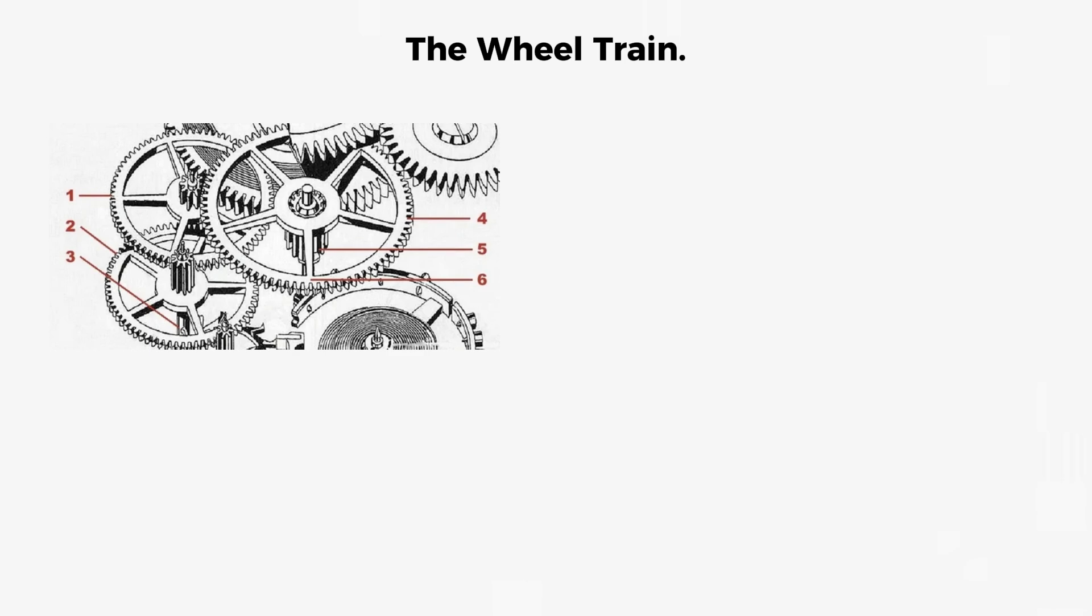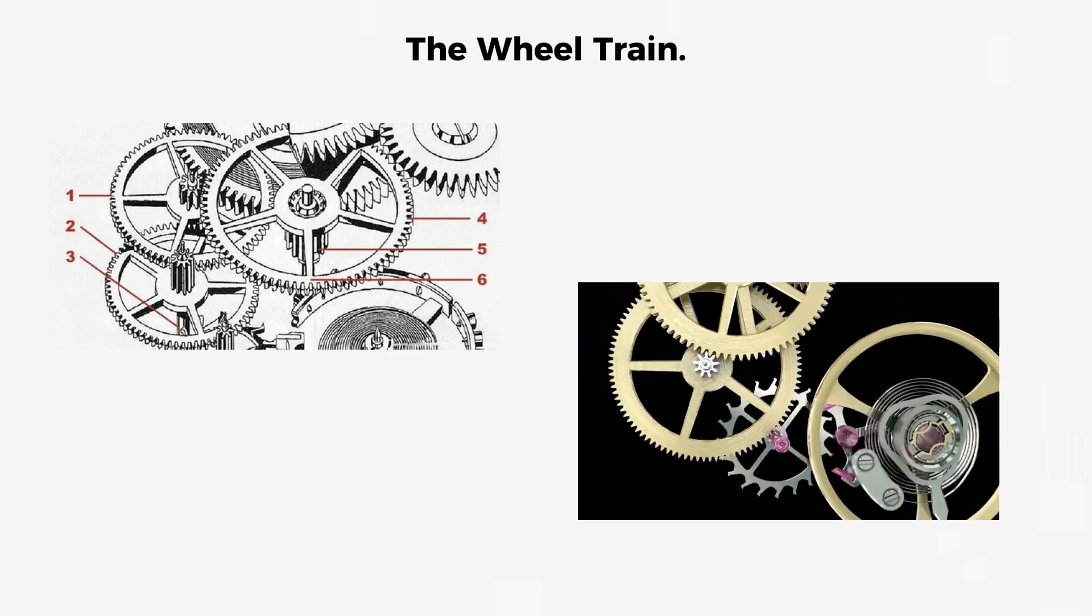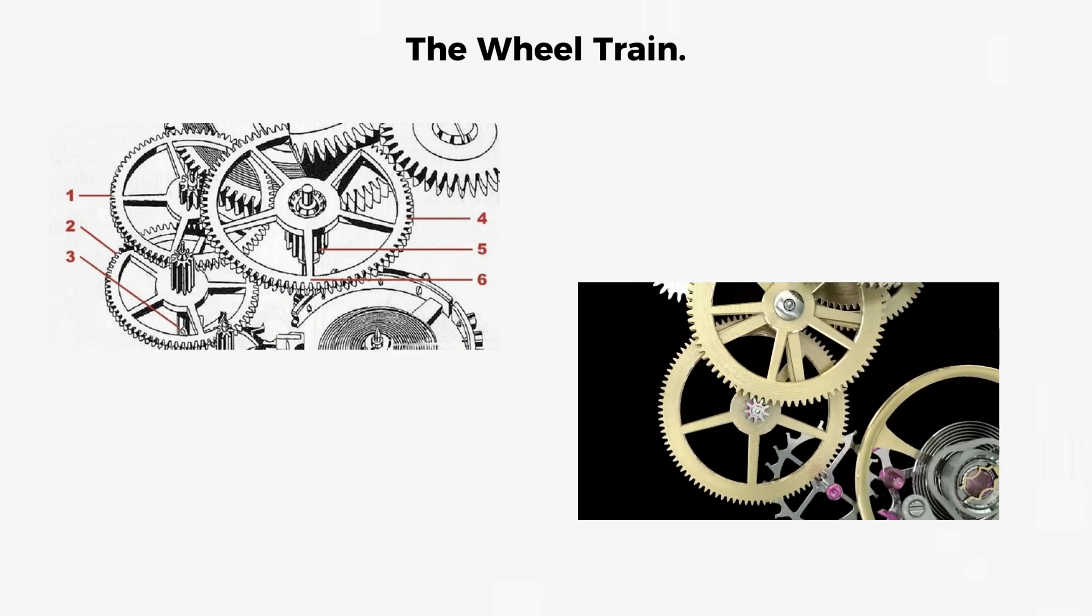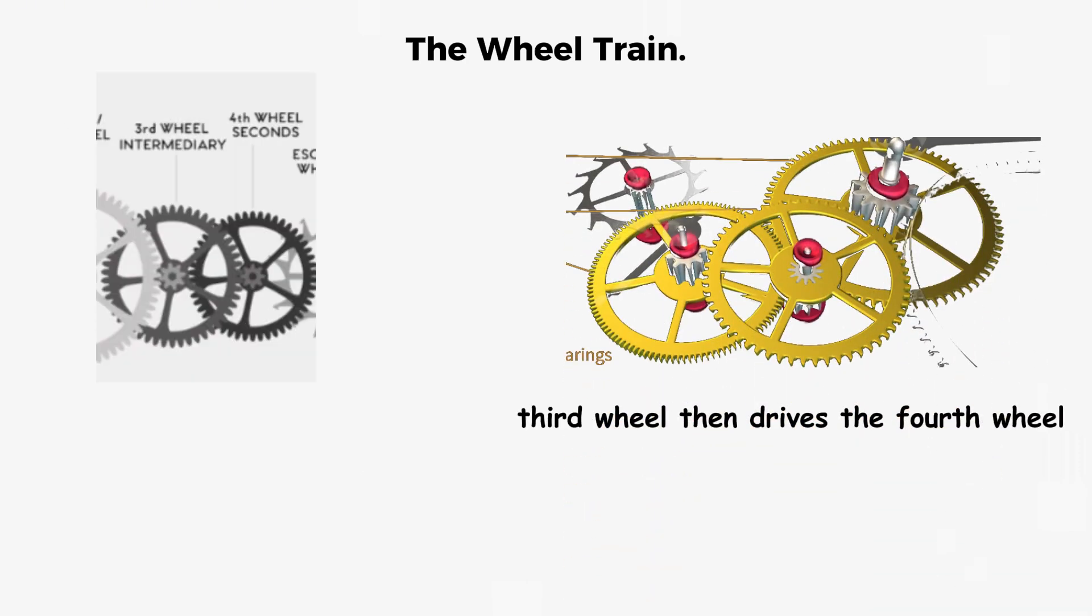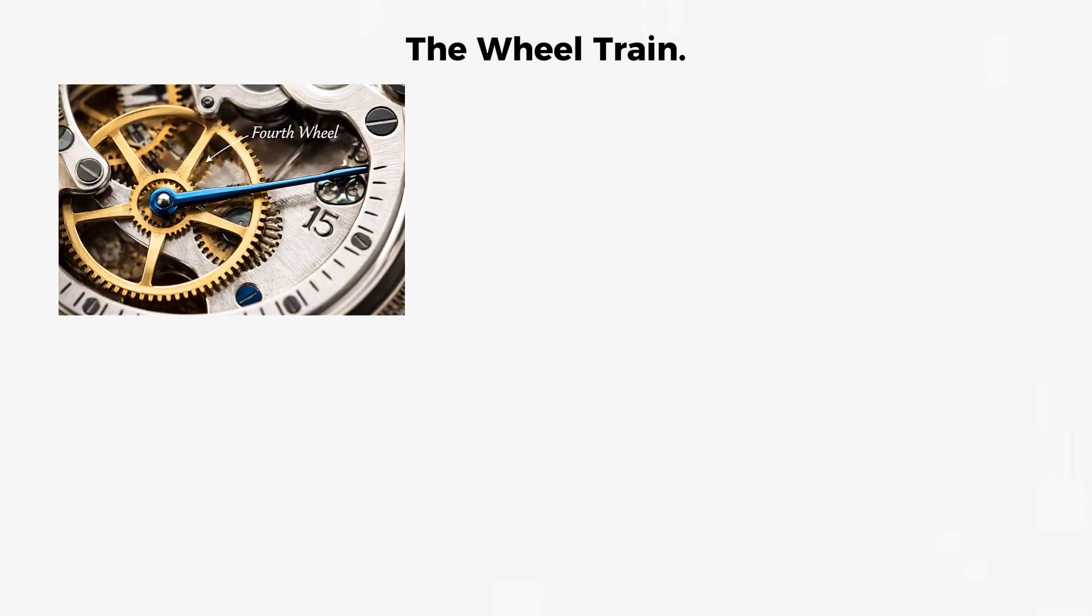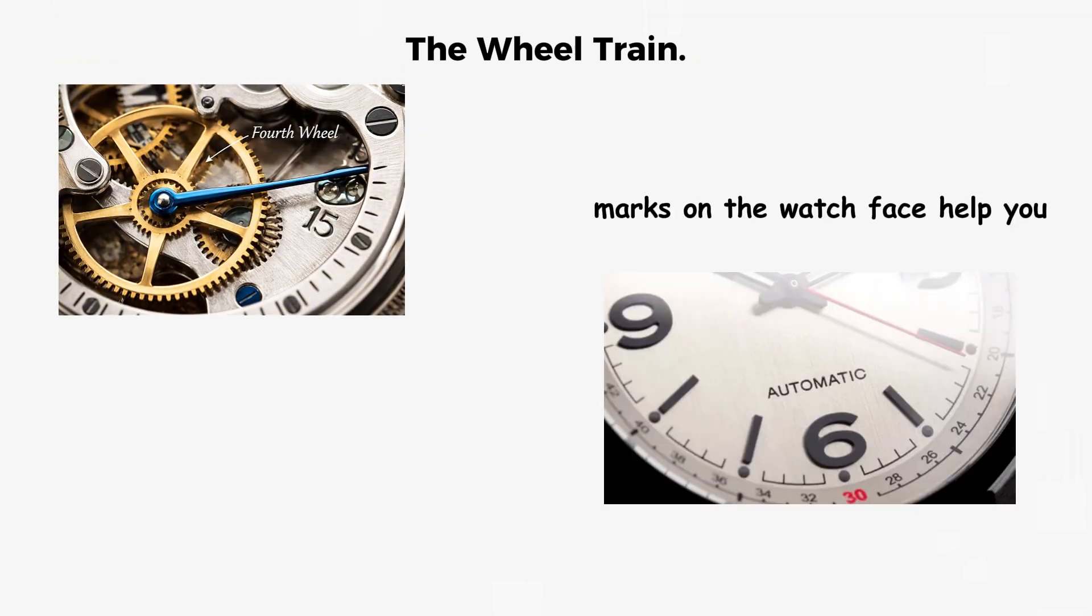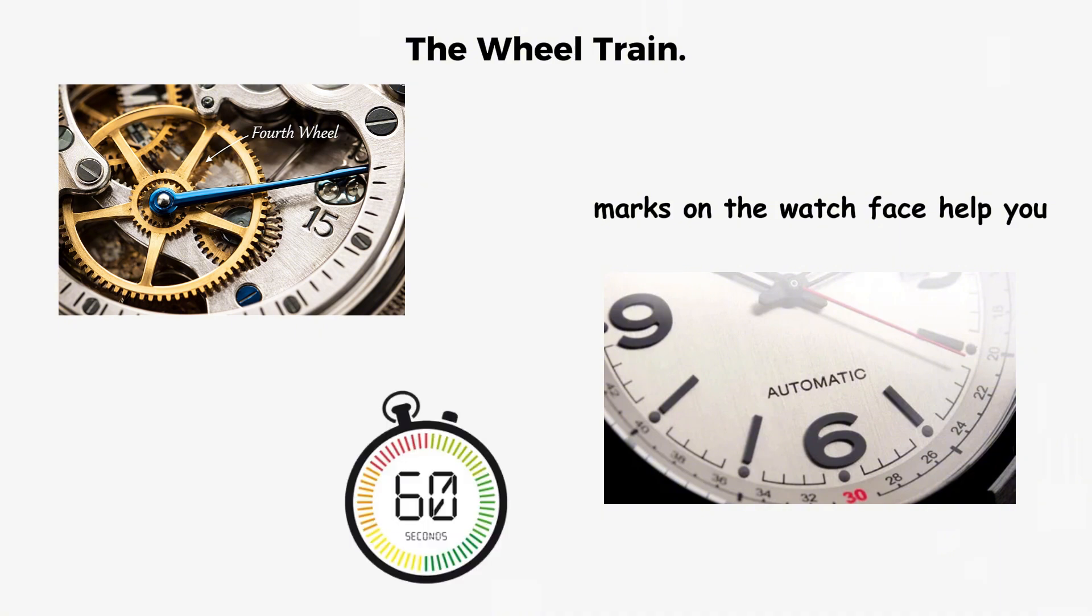The center wheel meshes with the third wheel, which exists purely as an intermediate gear to maintain the correct ratios throughout the system. The third wheel then drives the fourth wheel, which rotates once per minute in small incremental steps. The fourth wheel carries the seconds hand, and marks on the watch face help you see how many seconds have passed during its 60-second revolution.